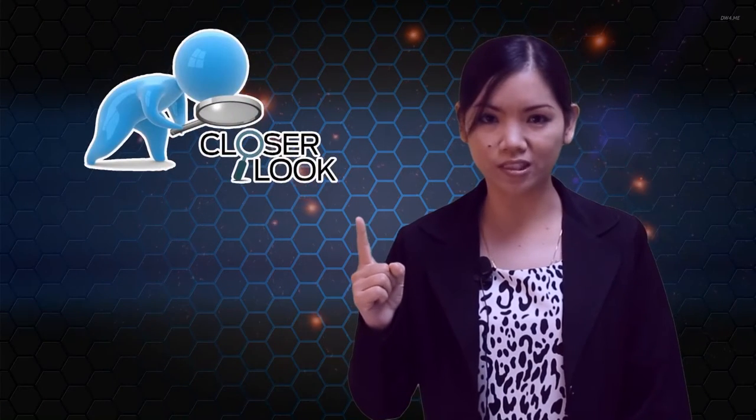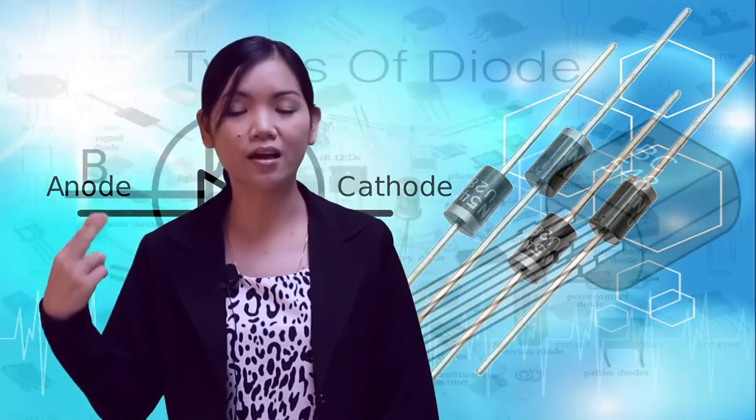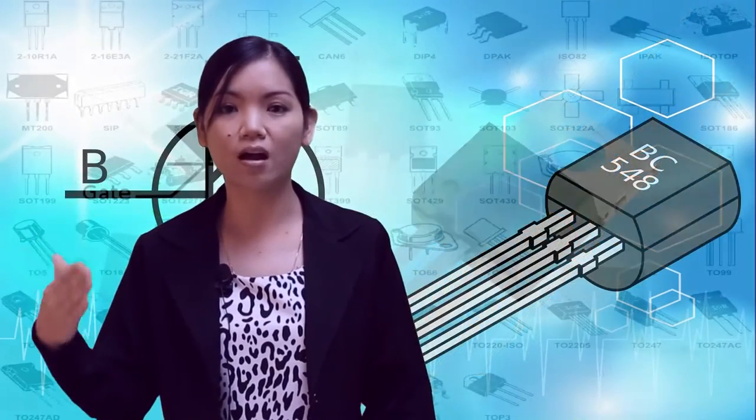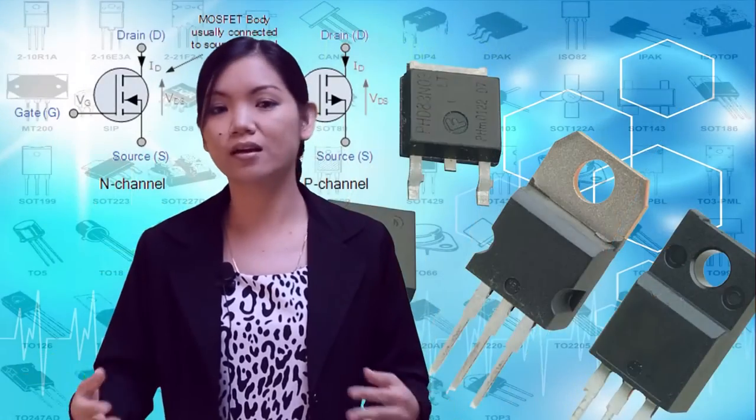Let us take a closer look at semiconductor devices. Semiconductor devices such as diode, transistor, SCR, and MOSFET are made of semiconductor material such as silicon and germanium. What makes this electrical core still relevant until today?